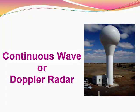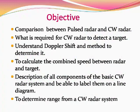So let us see what are the objectives of this class. The objectives are to understand the differences between pulsed radar and CW radar, what is required in a CW radar to detect a target, and understand what exactly Doppler shift means and how to find this Doppler shift. How to calculate the combined speed between target and the radar — that means when the radar is moving and the target is also moving. Then we are going to find out what are the components of a basic CW radar system and understand their operations and characteristics.